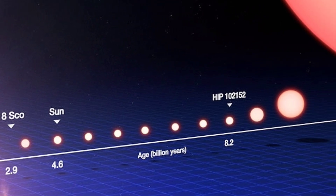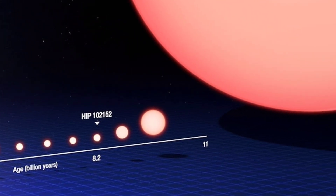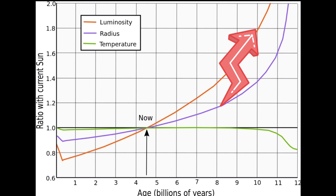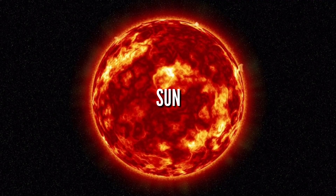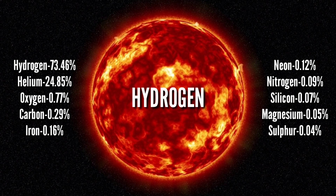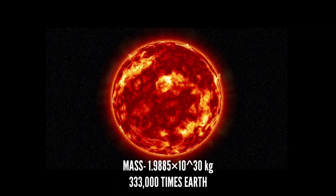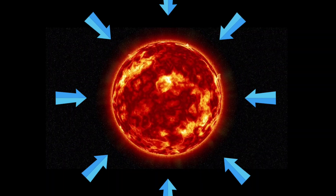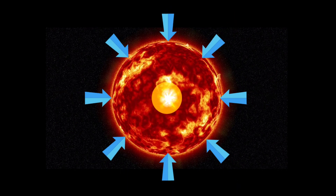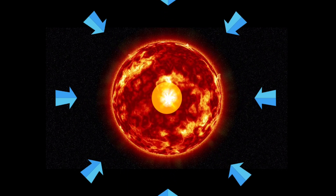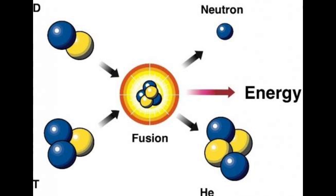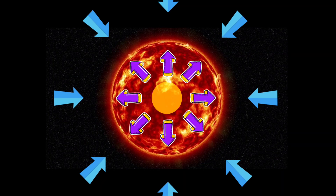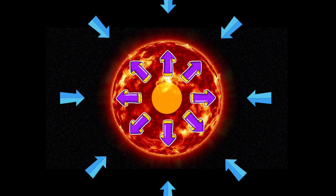The sun has a certain size and luminosity. Its main component is hydrogen. The gravitational force compresses the core of the sun. The hydrogen atoms undergo fusion, producing helium and releasing a huge amount of energy. This upward force maintains a steady energy output.